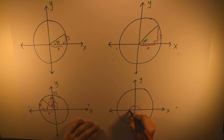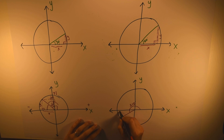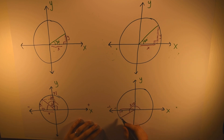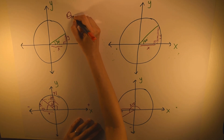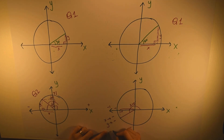For 210 degrees — that's 180 degrees plus 30 degrees — drawing the right triangle, x is negative and y is also negative. So here both are negative. The 30-degree and 60-degree angles are in Quadrant 1, 135 degrees is in Quadrant 2, and 210 degrees is in Quadrant 3.